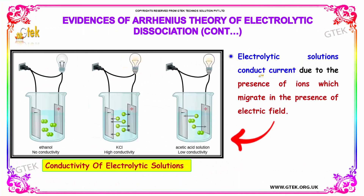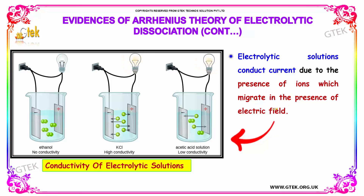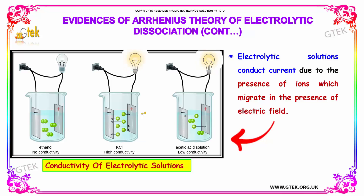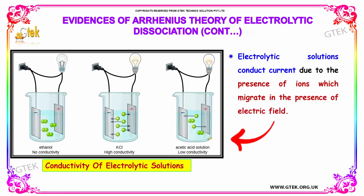Electrolytic solution conducts current due to the presence of ions which migrate in the presence of an electrical field. Here you are able to see: ethanol shows no conductivity, potassium chloride shows high conductivity, and acetic acid solution shows low conductivity.